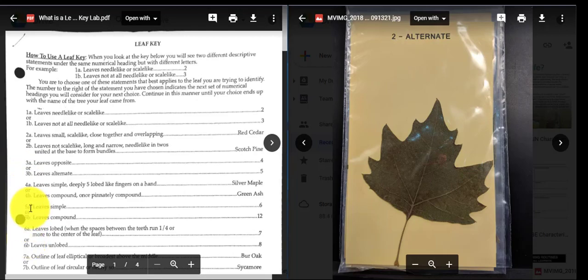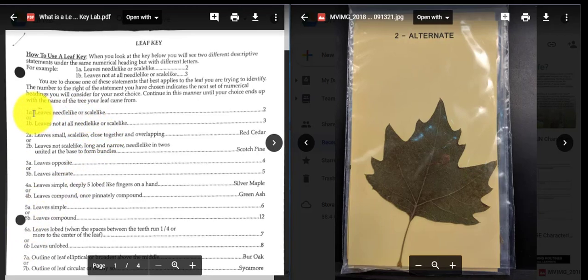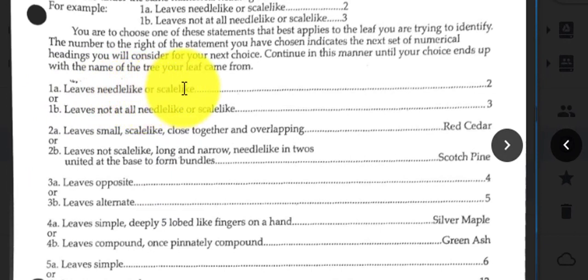So these are your couplets, and what the couplets do is they make statements based on the characteristics of a leaf. For example, couplet A1 says the leaves are needle-like or scale-like, and couplet B says the leaves are not at all needle-like or scale-like. Sometimes they'll state a characteristic, and then basically in the second couplet state that it's not that characteristic, or they will state a characteristic and then state the opposite or alternative to that characteristic.